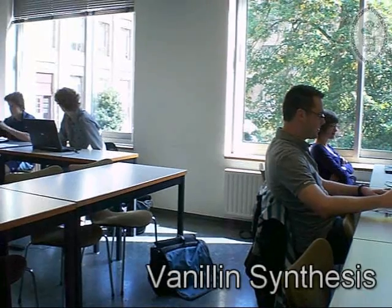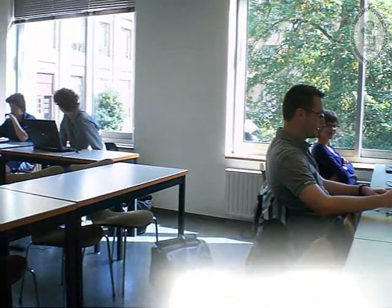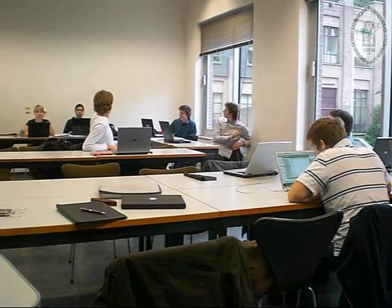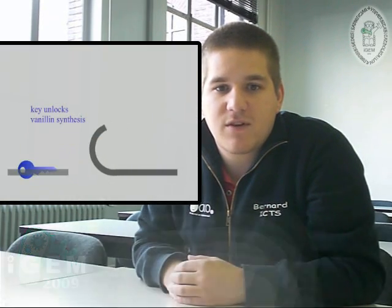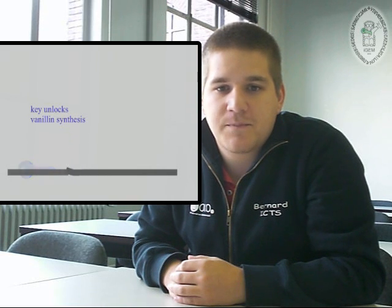So now the blue key strand is ready to be used in the vanillin production — that's right. The vanillin production component consists of five conversion stages and is activated by a blue key. The blue key unlocks a strand of RNA that is used to produce five enzymes: SAM8, SAM5, COMT, ECA, and FCS.